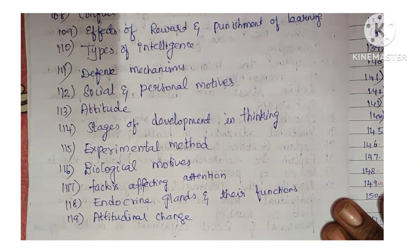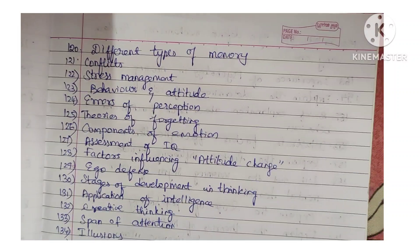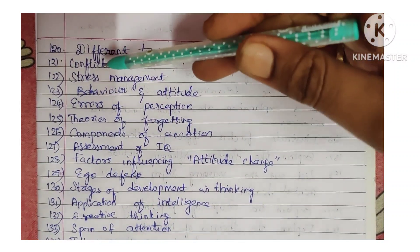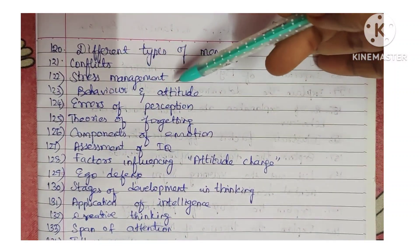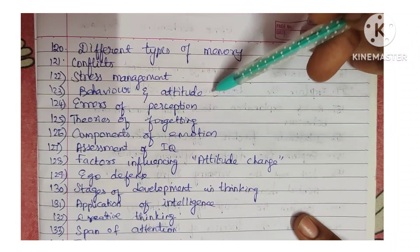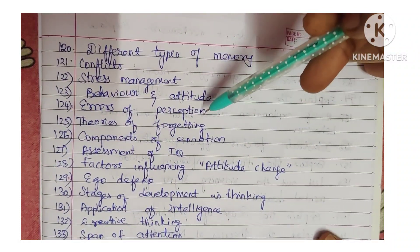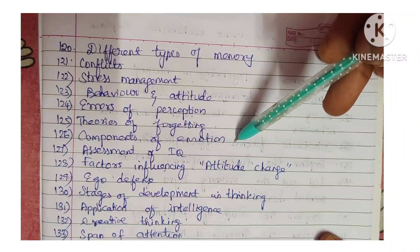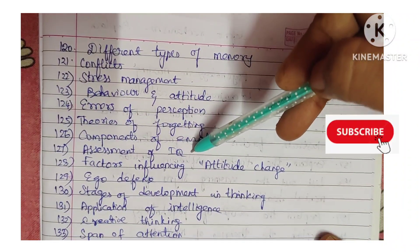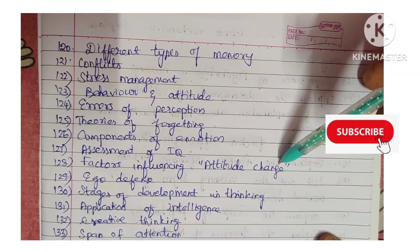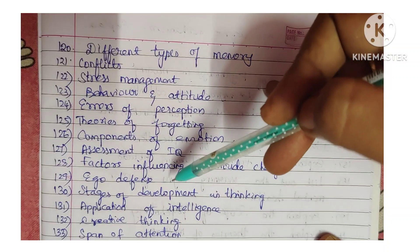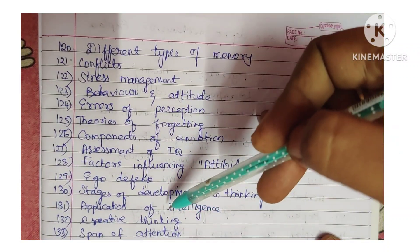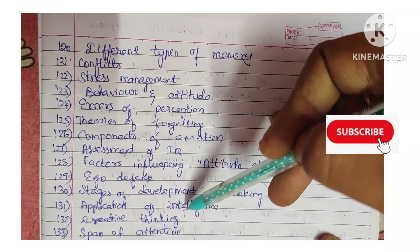Additional topics listed include: attitudinal change, different types of memory, conflicts, stress management, behavior and attitude, errors of perception, theories of forgetting, components of emotion, assessment of IQ, factors influencing attitude change, ego defense mechanisms, and stages of development in thinking.